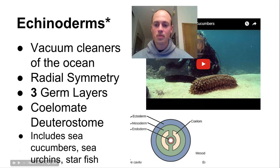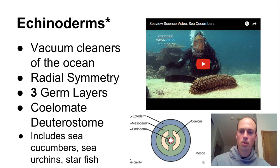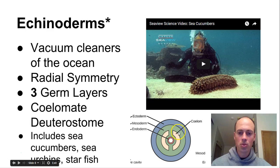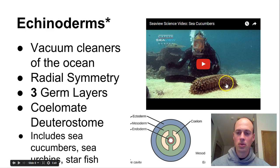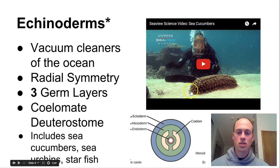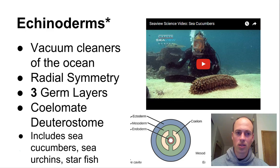The last grouping of simple invertebrates are echinoderms. These have a true coelom in the blastula. They're known as the vacuum cleaners of the ocean and include sea cucumbers, sea urchins, and starfish. These are really important animals in the ocean ecosystem — like a vacuum cleaner, they clean the bottom surface of all the dead matter that sinks down. In the linked video, you can see a sea cucumber eat a bunch of sand, sift out useful food through its digestive system, and poop out really clean sand.